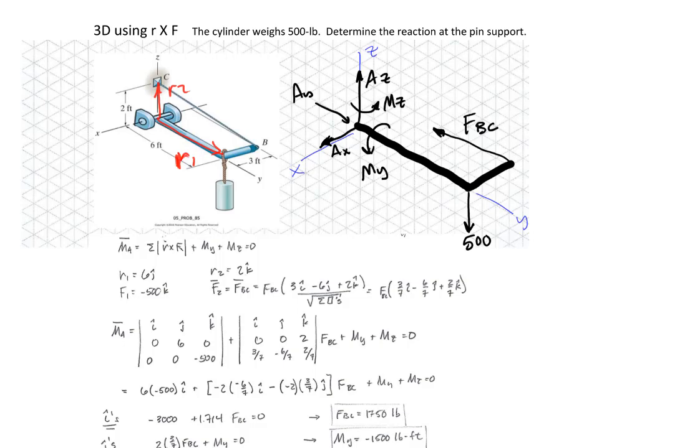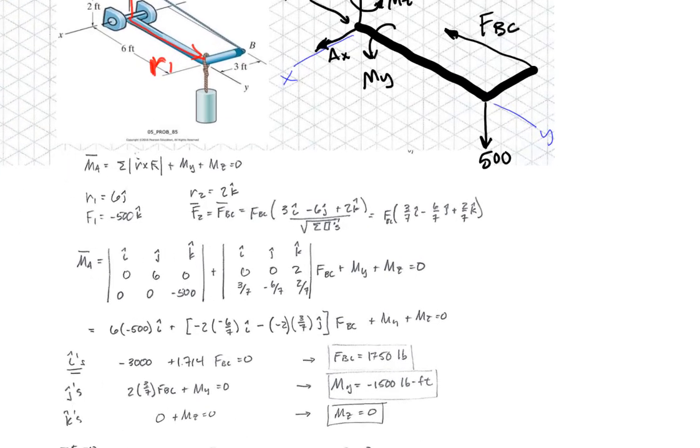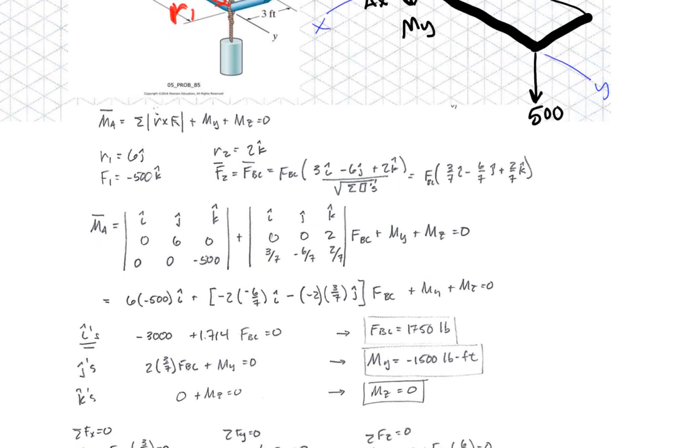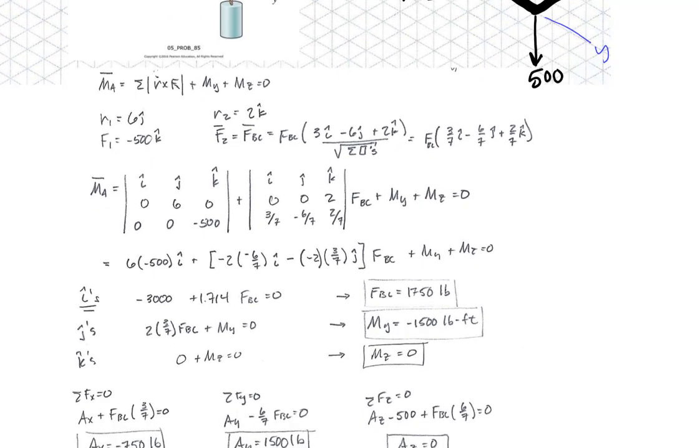Now we just do the cross products, and we see what we're going to write the equation, and do the cross products, and see where we're at. So the moments here are going to be equal to the sum. Well, here I got my generic equation. The moment about A is equal to the sum of the R cross Fs, plus the reaction in Y, and the reaction in Z.